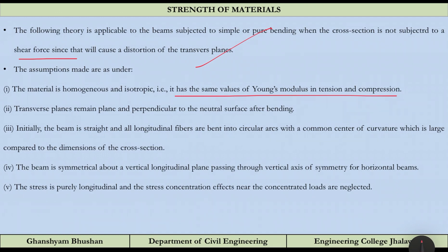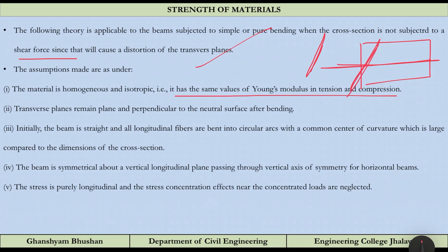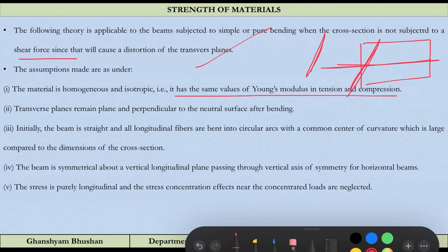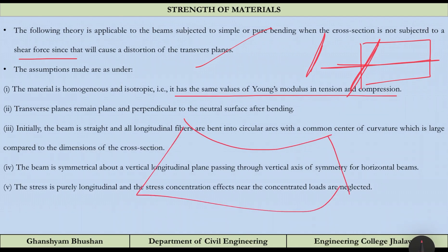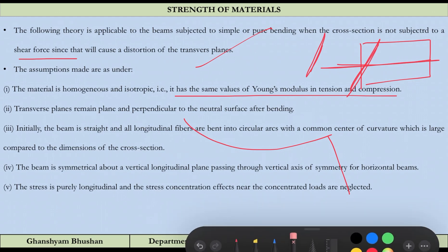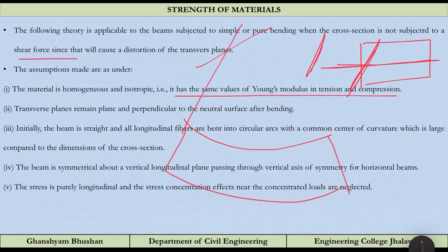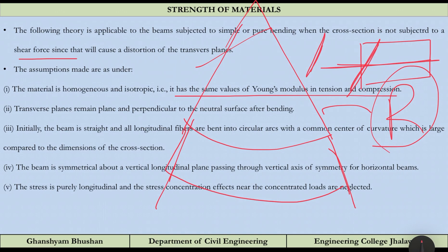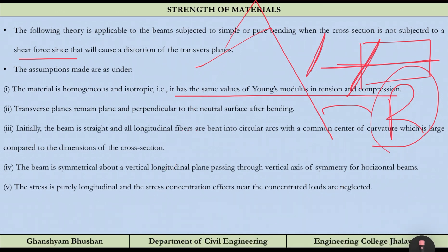The second assumption is that transverse planes remain plane and perpendicular to the neutral surface after bending — a section that is straight before bending remains straight after. A further assumption is that the beam is initially straight and all longitudinal fibers bend into circular arcs with a common center of curvature, and the radius of curvature is very large compared to the cross-sectional dimensions.